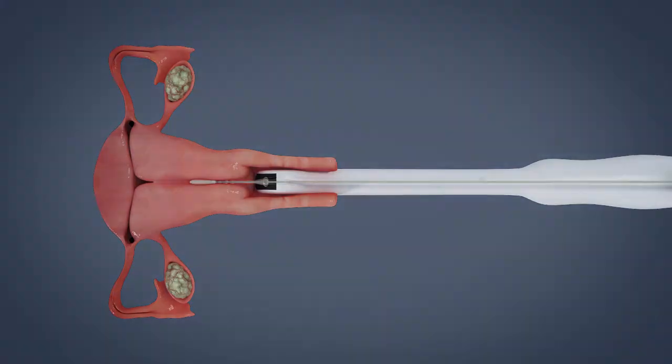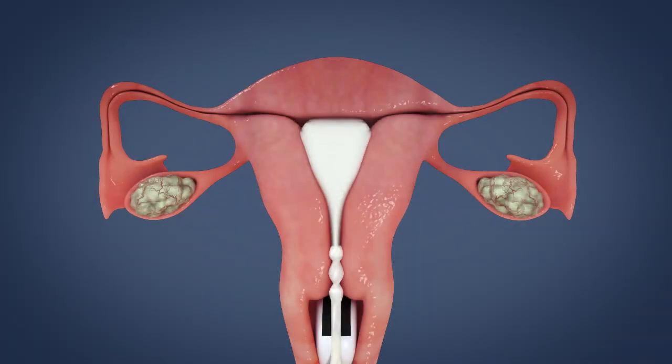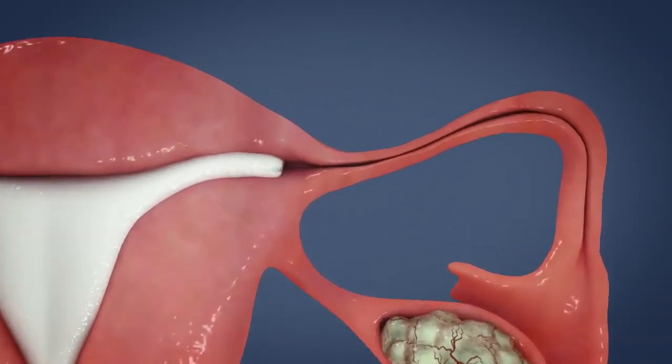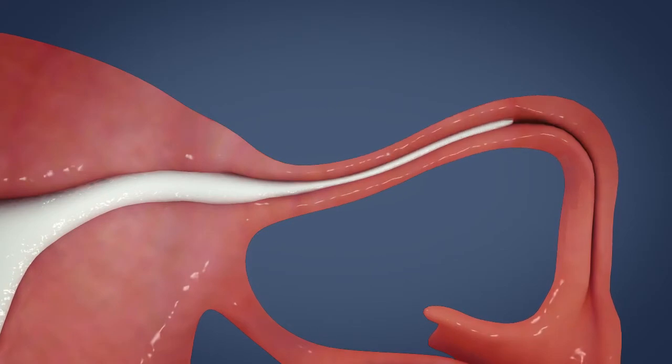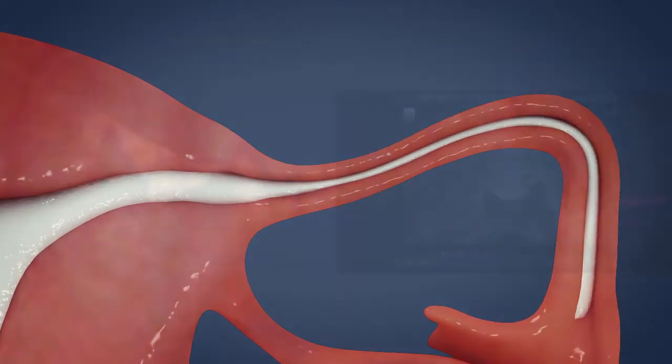Slowly infuse the gel foam in order to avoid discomfort. In a healthy fallopian tube, the gel foam will run through the tubes, and the fallopian tubes will be visible during the ultrasound procedure.